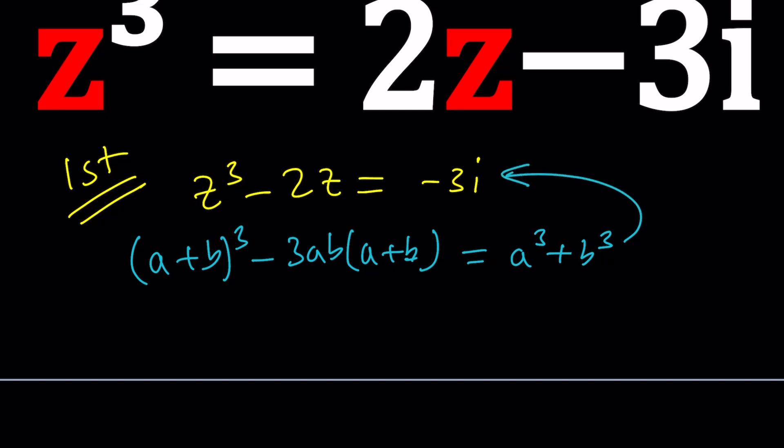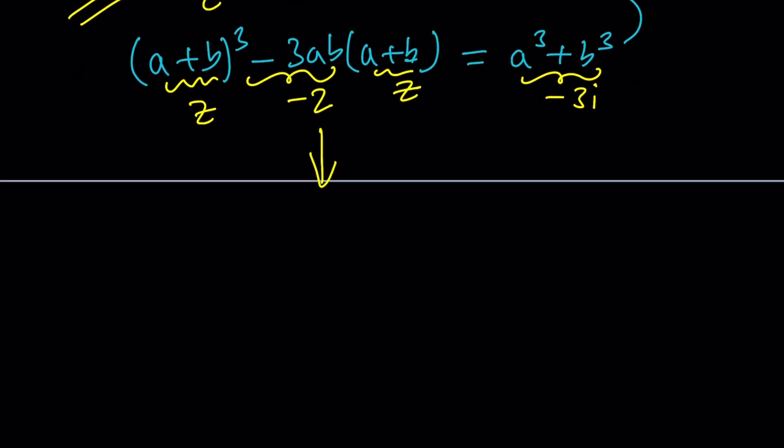We're going to make it look like our equation by doing some substitutions. Set A plus B equal to Z, set this equal to negative 3i, and set this equal to negative 2. So exactly the same equation that we have. This means I have to solve a system made up of these two equations, which is AB equals 2/3 by dividing both sides by negative 3, and A cubed plus B cubed equals negative 3i.